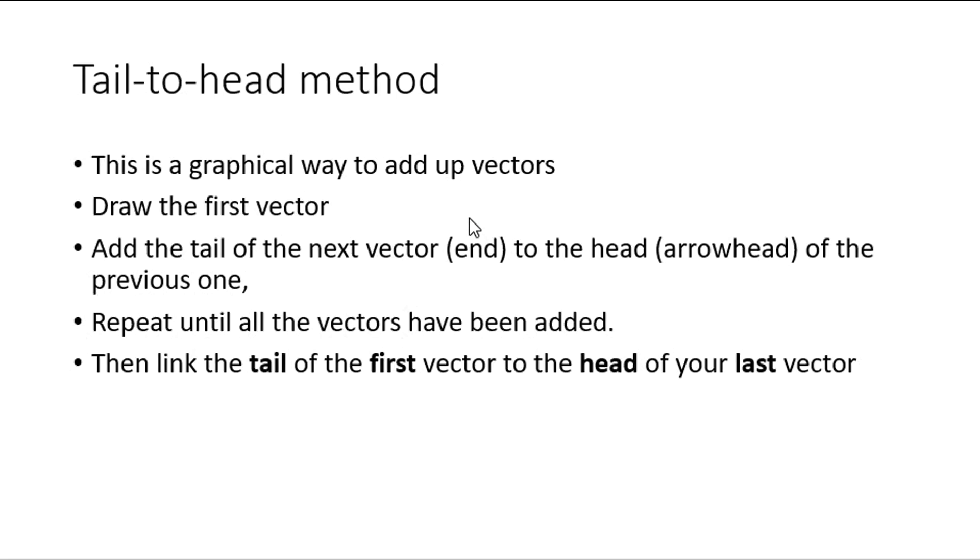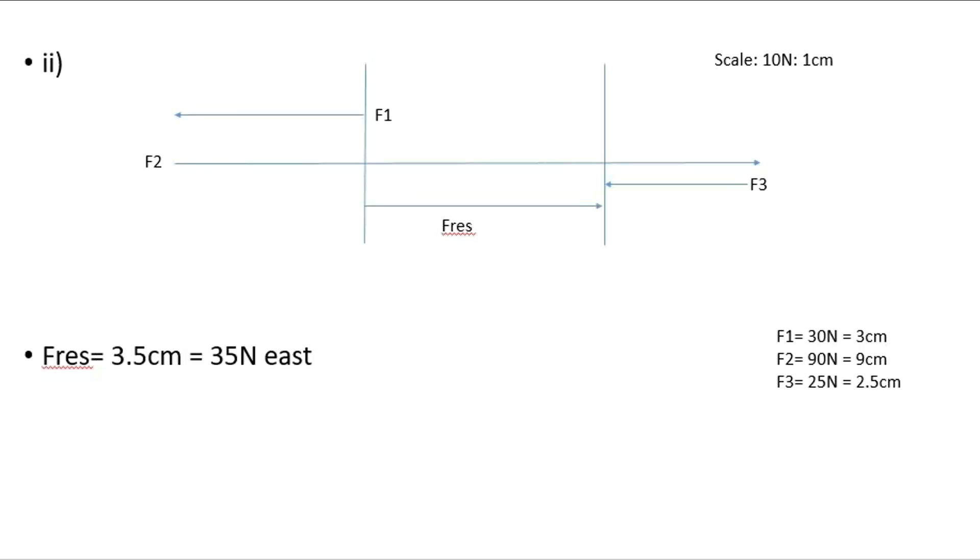Here's the head of our last vector. So that means in this direction here, this is going to be our F resultant. Now that we've got that, it's the same as the picture in the notes. We've done the steps, paid attention to them, and obeyed them.